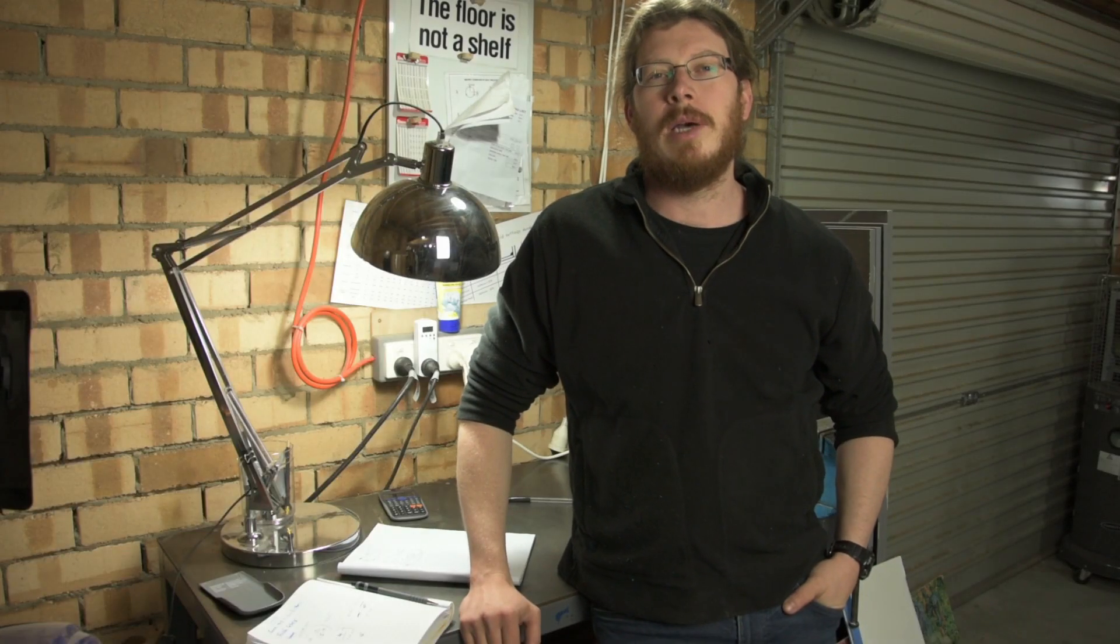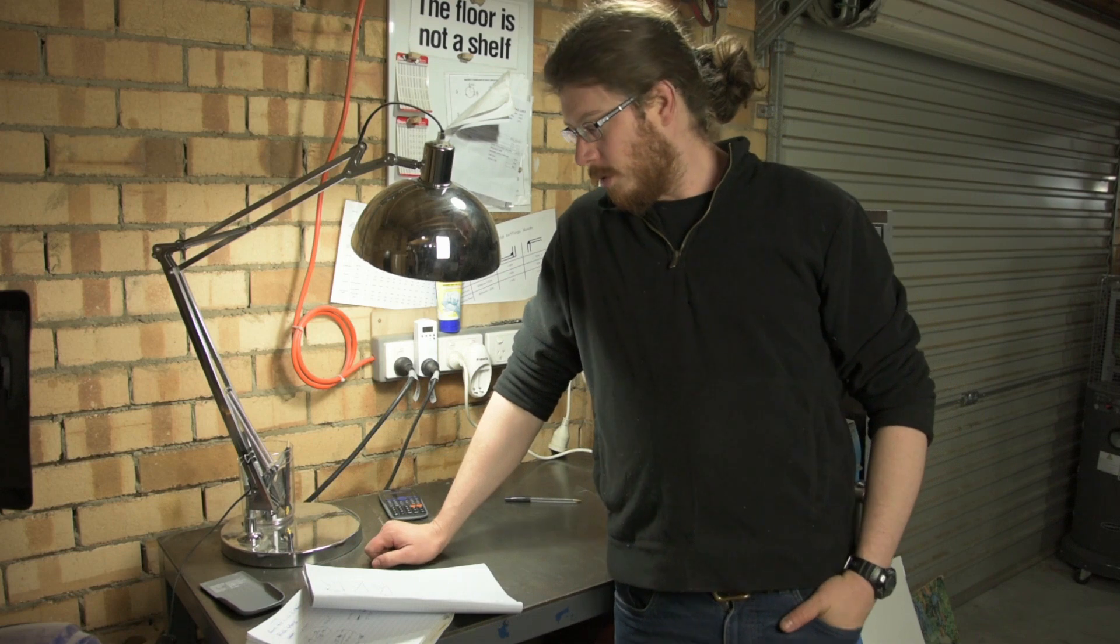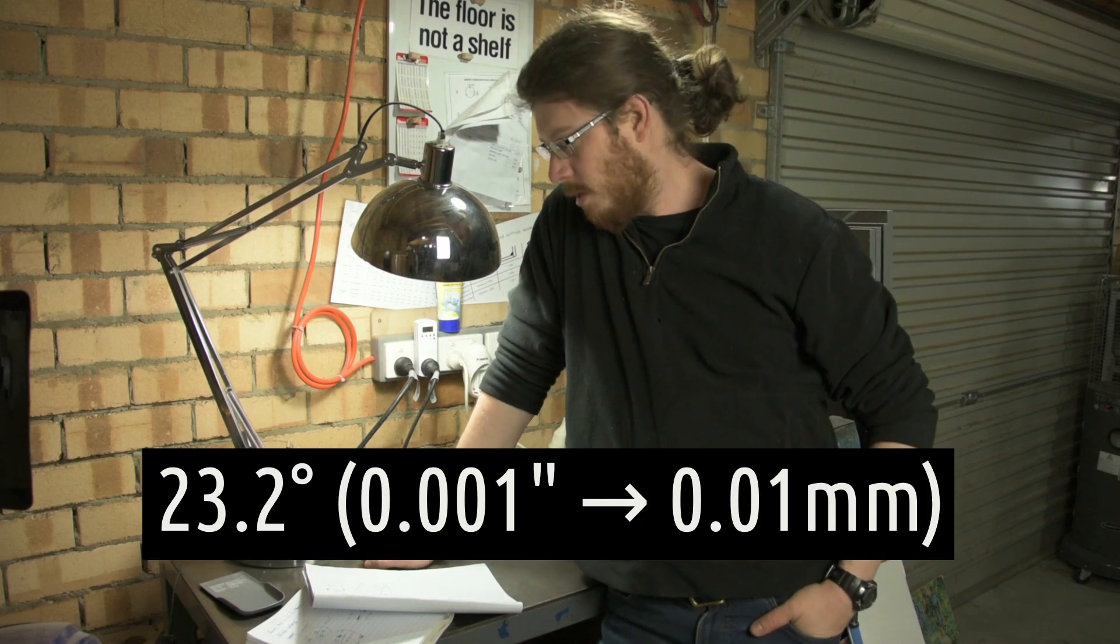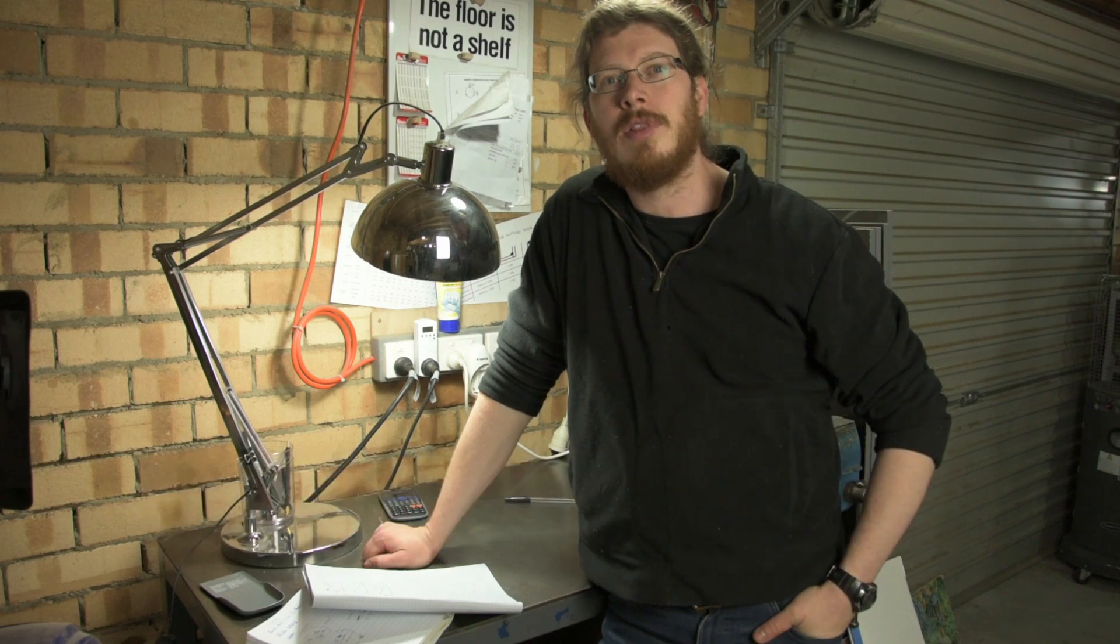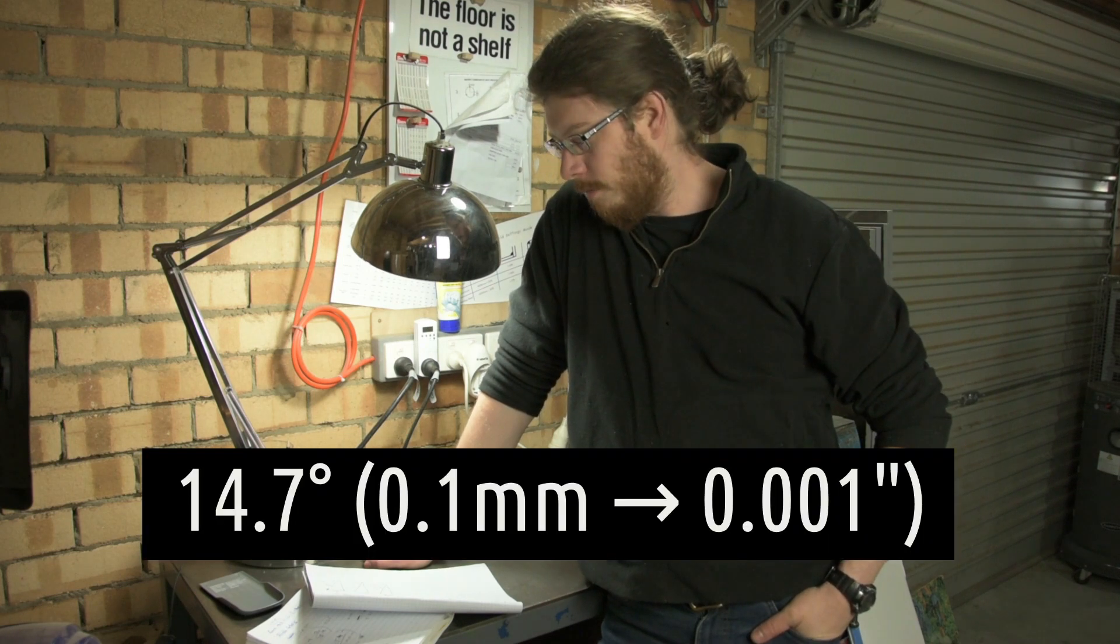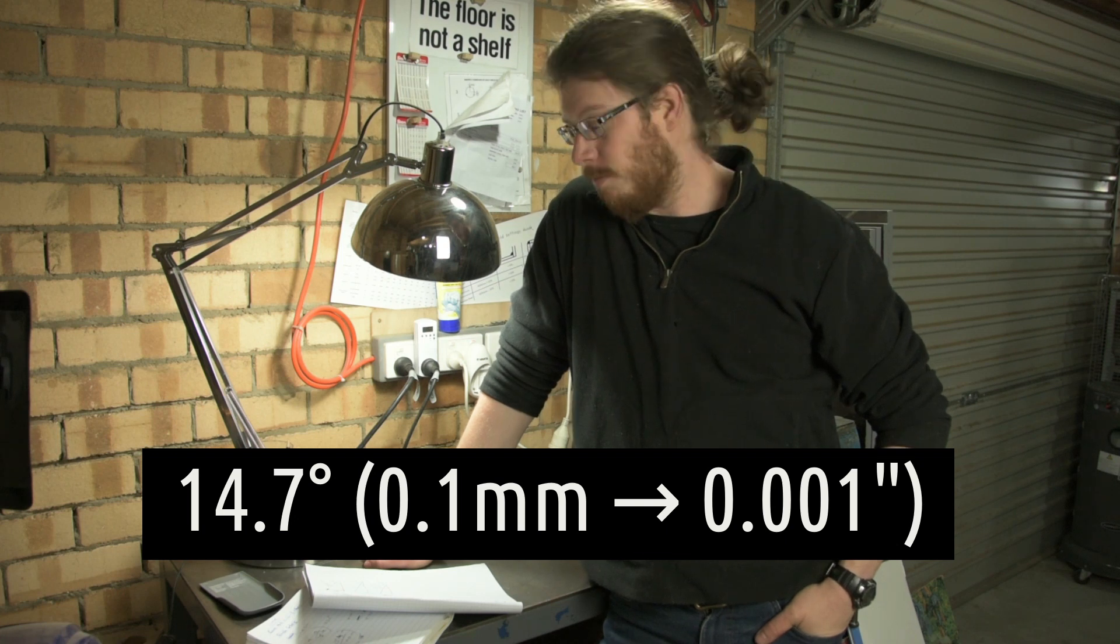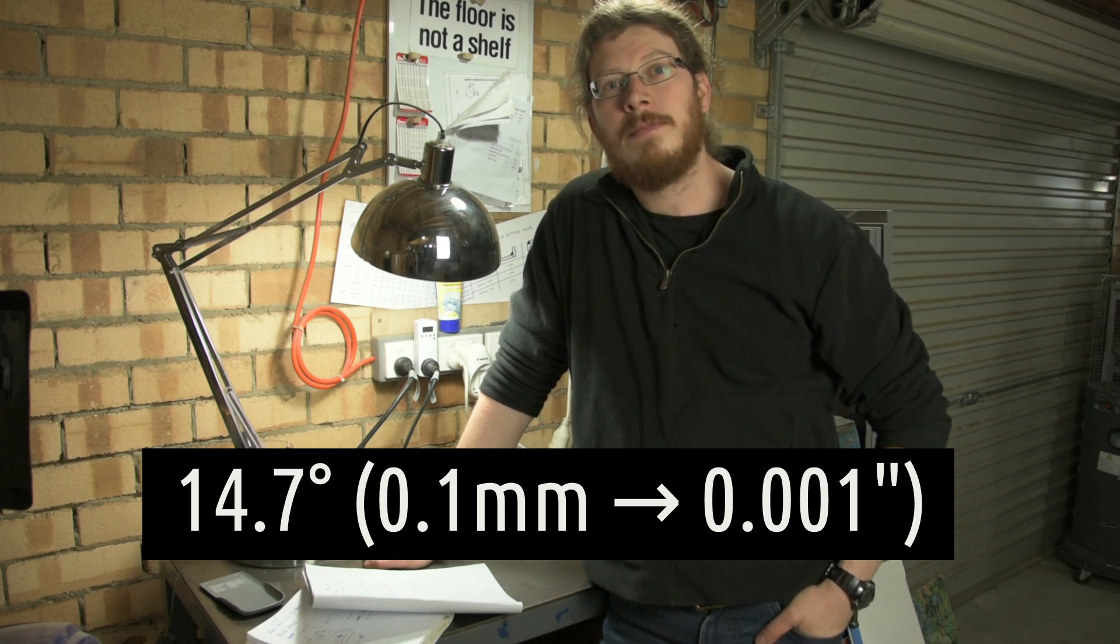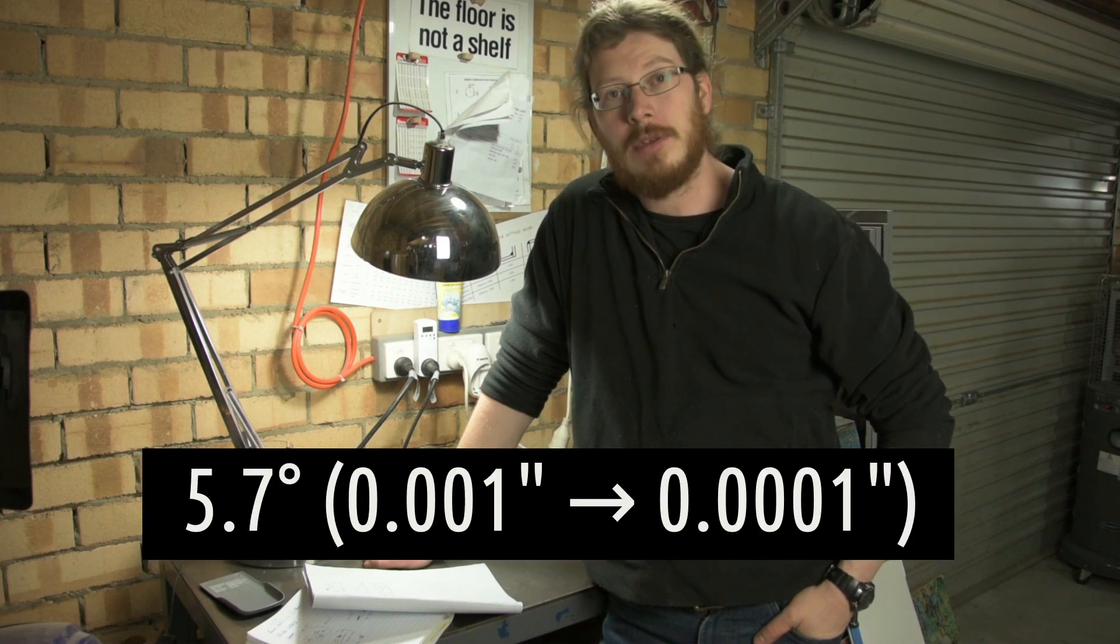Well thanks for joining me, I hope that was useful. Just to recap, those numbers were 23.2 degrees, and that will turn a one thou movement into one hundredth of a millimeter. 14.7 degrees will turn a 0.1 millimeter movement into one thou. And if you want to do the thousandths to ten thousandths thing, that's 5.7 degrees.